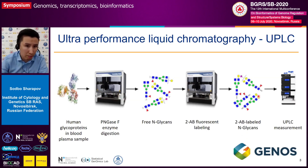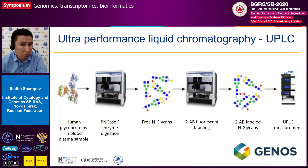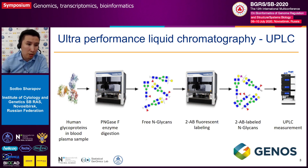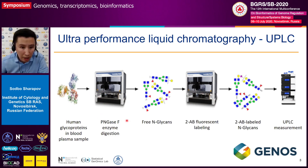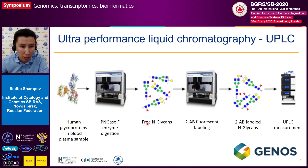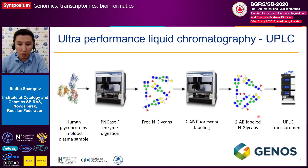So how can we analyze and measure the N-glycome? We can use chromatography-based approaches, for example ultra-performance liquid chromatography. The pipeline of measurement is presented on the slide. You start basically with a sample of human blood plasma, where we have a mixture of different proteins and glycoproteins. We treat this sample with a special enzyme, PNGase F, which cuts the N-glycans from the amino acid backbone and releases free N-glycans into the liquid. Then you label the glycans with a fluorescent label and put the fluorescently labeled N-glycans into the UPLC machine.